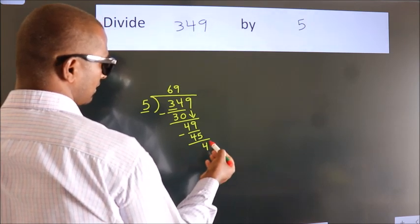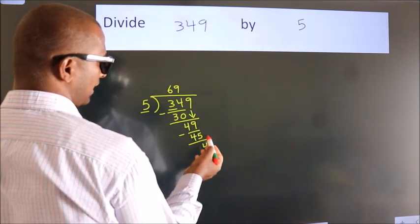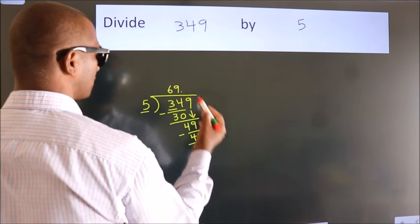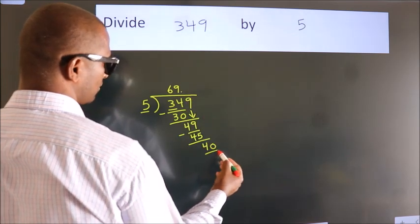After this, no more numbers to bring it down. So what we do is, we put a dot and take 0. So 40.